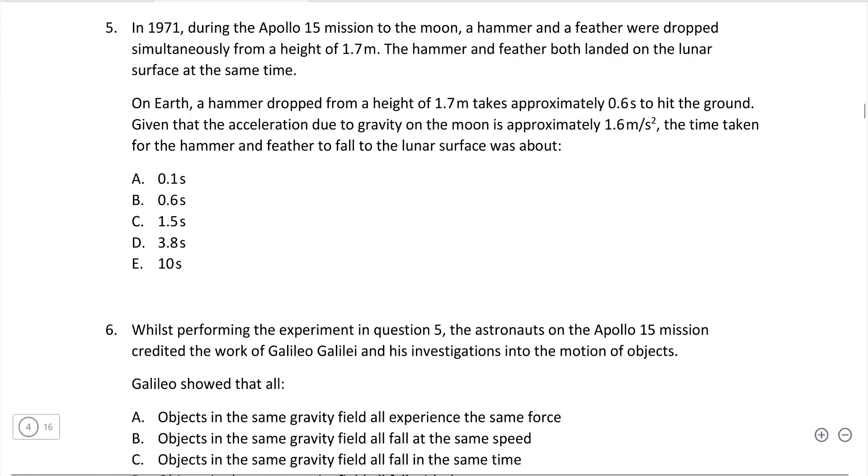Question 5. In 1971, during the Apollo 15, a hammer and a feather were dropped from a height of 1.7 meters, and they hit the ground at the same time. Now on Earth, though, we have a hammer dropped from 1.7 meters. It takes about 0.6 seconds to hit the ground. Given that the acceleration due to gravity of the moon is much lower, it's around 1.6. Calculate the time taken for the hammer and the feather to fall on the lunar surface.